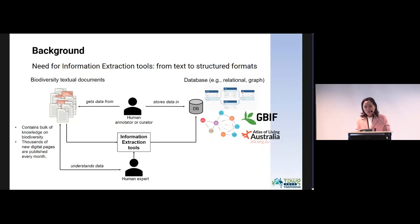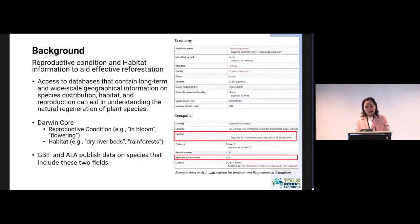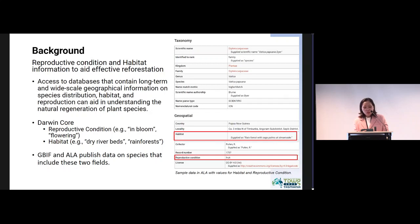These information extraction tools are created by human experts who understand details and patterns in data. Understanding the biology underpinning the natural regeneration of plant species in order to make plans for effective reforestation is a complex task. This can be aided by providing access to databases that contain long-term and wide-scale geographical information on species distribution, habitat, and reproduction. Darwin Core is an internationally agreed data standard that includes terms used to represent information on species' reproductive condition and habitats. Reproductive condition can be populated with values such as 'in bloom' and 'flowering', while habitat can be populated with values such as 'dry riverbeds' and 'rainforests'.